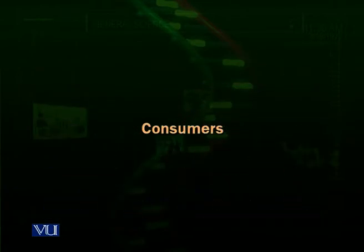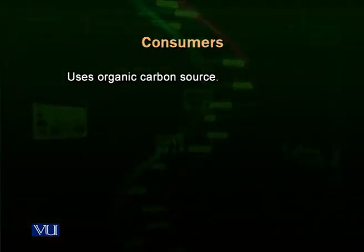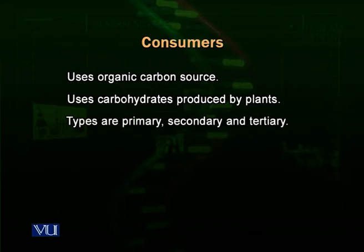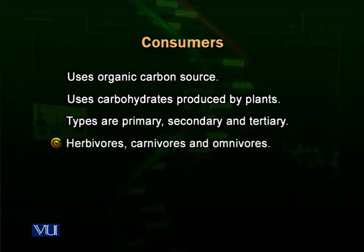Consumers are the second level of feeding, or we can call it the second trophic level. But these are themselves divided into further levels as we looked at in a pyramid. Consumers utilize organic carbon sources — they can eat plants or other animals, and they utilize carbohydrates produced by plants. Their types are primary, secondary, and tertiary consumers. Primary consumers eat plants; we also call them herbivores.